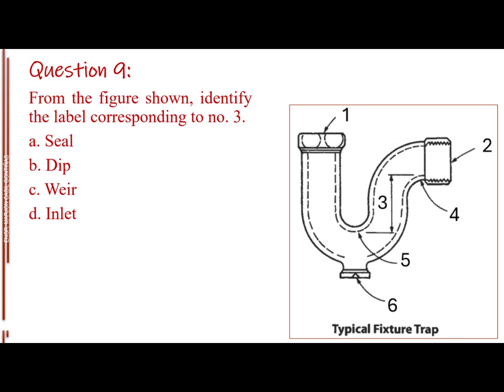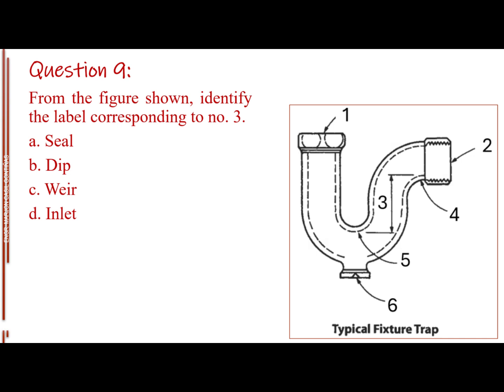Question number 9. From the figure shown, identify the label corresponding to number 3. Letter A, seal. Letter B, dip. Letter C, wear. Letter D, inlet. The answer is letter A, seal.